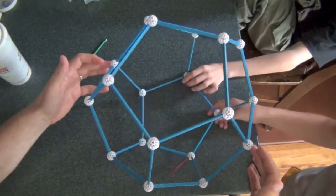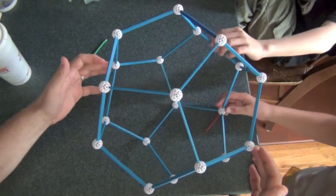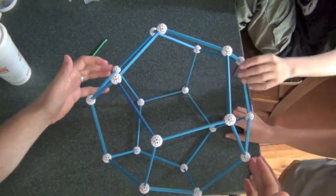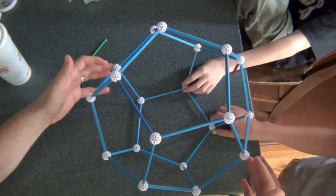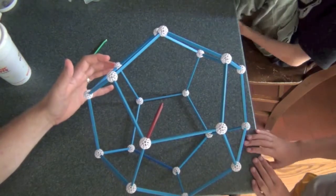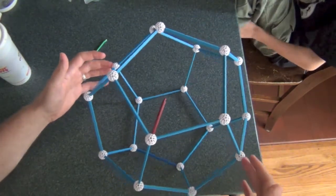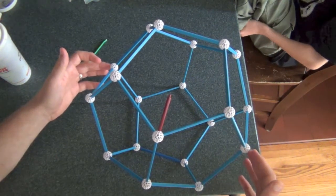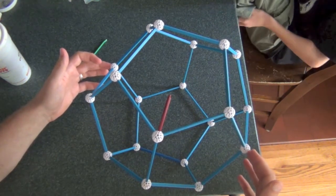Doesn't count, still on an edge. There's two. That's a new one. And then we're back to where we started. So for each opposite pair of vertices, we found two rotational symmetries.